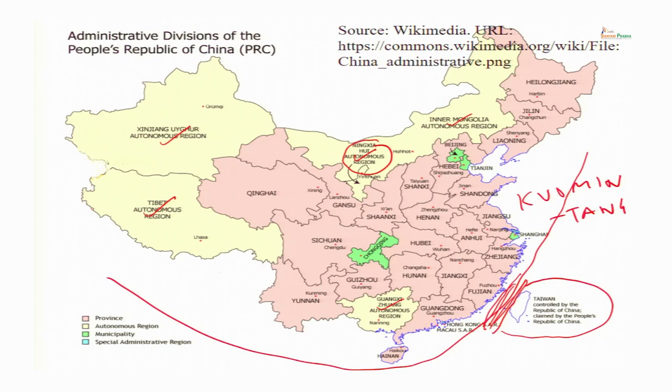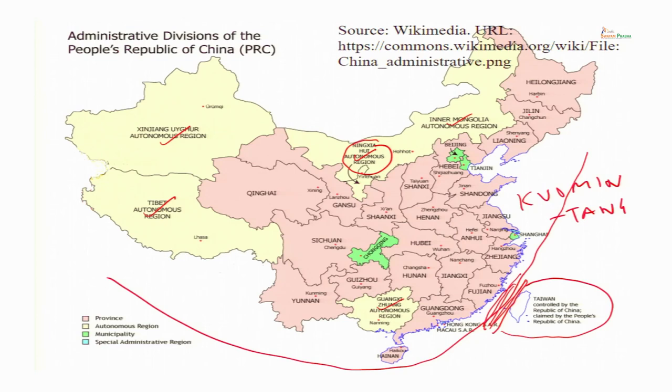The four municipalities are Beijing, Tianjin, Shanghai, and Chongqing. You can see these four municipalities in green on the map.